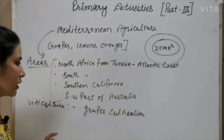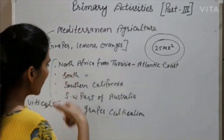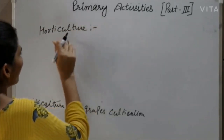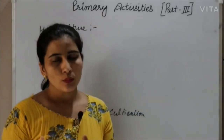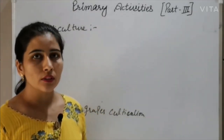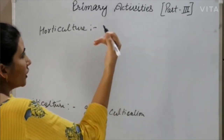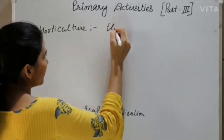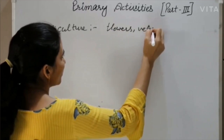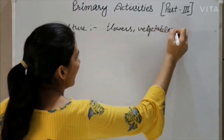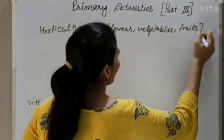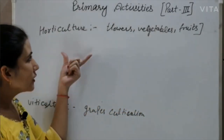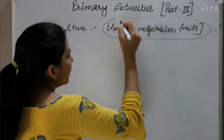The third point is horticulture. In this type of agriculture, mainly high-value crops are grown, such as fruits, vegetables, and flowers. These valuable crops are cultivated in a small land area, and the farms are well connected to the market for transportation and sale.